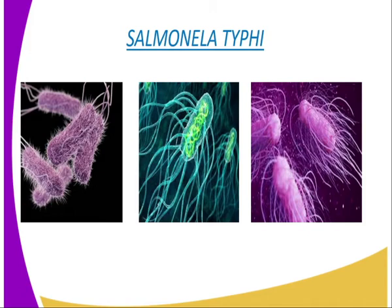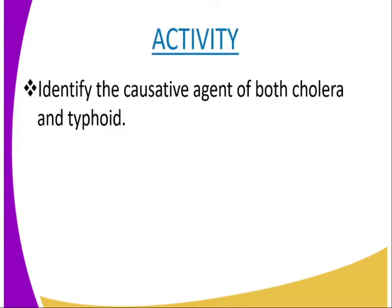To prevent or treat typhoid, there should be proper disposal of feces and urine to prevent spread of the bacteria. Domestic water should be boiled or chlorinated before drinking. Hands and utensils should be washed clean before eating. Fruits should be washed with clean water before being eaten. Food handlers should be clean and subjected to regular medical check-ups. Healthy people may be vaccinated with attenuated or weakened typhoid bacteria to provide immunity for at least two years. Treatment involves the administering of antibiotics.